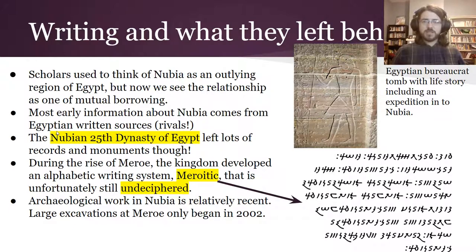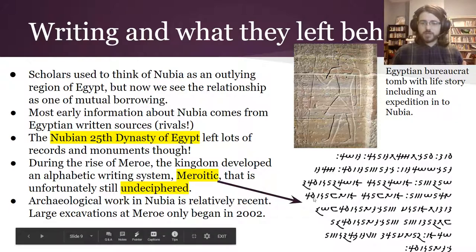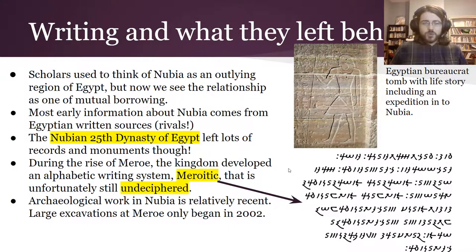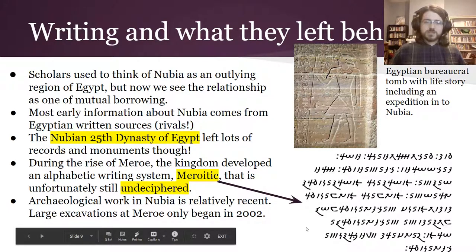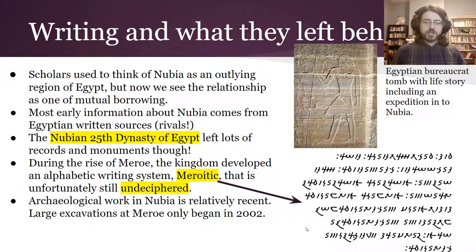The Nubian 25th Dynasty of Egypt — that's Taharqa, mentioned earlier — is the time when Nubian kings controlled all of Egypt. They left lots of records, big monuments, and things like that, so we have a fair amount of evidence from that period. The rise of Meroe brought pyramids, larger structures, and more written records. Problem is, the Meroitic script is still undeciphered — we cannot read it yet. Archaeological work in Nubia is also relatively recent, and large excavations at Meroe only began around 2002, so we would know a lot more if people had been more interested in these African kingdoms earlier.